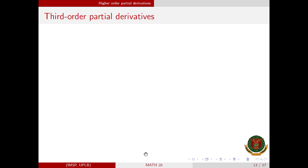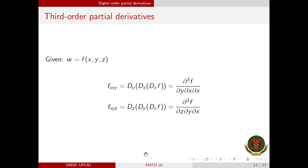Extending this second-order partial derivative into higher-order partial derivatives, we can actually differentiate into fourth, fifth, so on and so forth, but we will just deal with third-order partial derivatives. If we are given w = f(x, y, z) and we are using this notation, we are first differentiating f with respect to x, then x, then y.